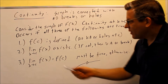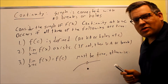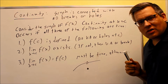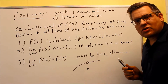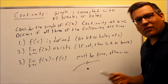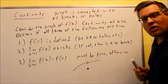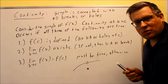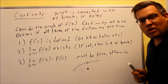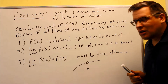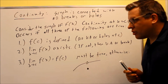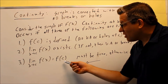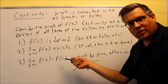The second condition is the limit must exist. We talked about in a previous section that a limit exists if the left and right hand limits approach the same number. If they don't, that means you probably have a vertical asymptote or a break in the graph. That's the second condition that must be true in order to be continuous at x equals c. The third condition must also be there.